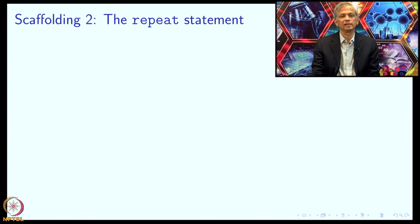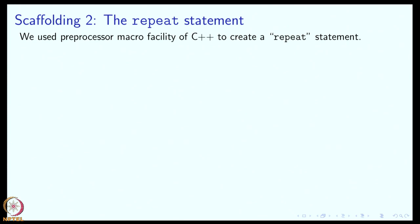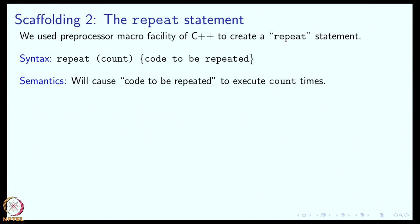The second part of scaffolding is the so-called repeat statement. This is not really a statement in C++. We are going to use the preprocessor macro facility of C++ to create a repeat statement. Here is the syntax: if you say 'repeat' followed by a count, a number or numerical expression, then the code following that in braces will get repeated count number of times. So, code to be repeated will execute count number of times.